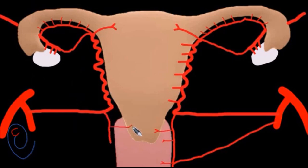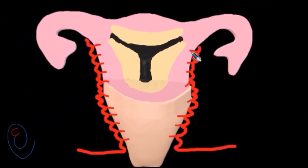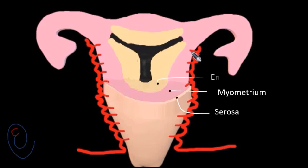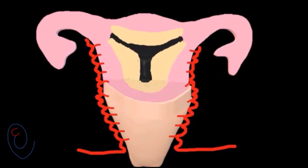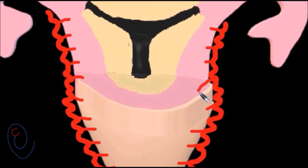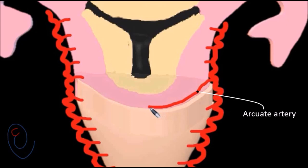Now a small part of the uterus is removed to see what happens inside. The three layers of the uterus are visible: the outer serosa layer, the myometrium, and the endometrium. When branches of the uterine artery penetrate the body of the uterus, they form the arcuate artery, which runs in the myometrium just under the serosa surface.